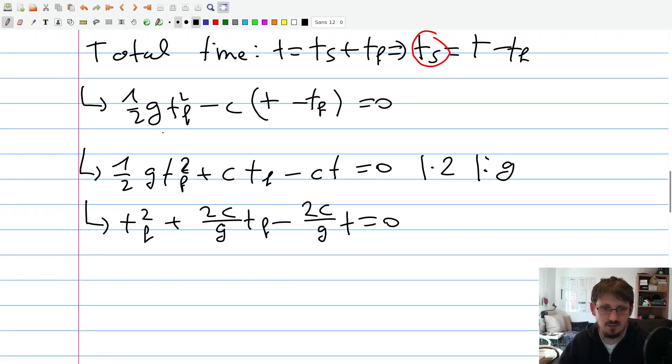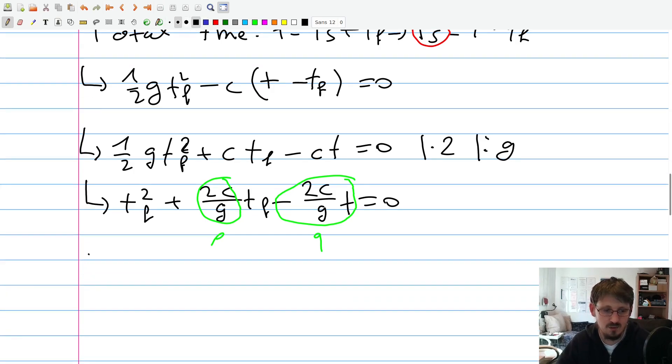And now we can use, as I said, pq formula in order to solve that. So in this case, this would be our p. And this whole part, including the minus sign, would be our q. So the pq formula is, I think, the easiest way how to do that. So the only thing which we have to do now, we have to write down tf is, of course, minus p half. So we have to write here minus c over g plus minus, because we have two solutions. And then here we have to write p half squared, c squared over g squared, minus q, so plus 2c t over g.